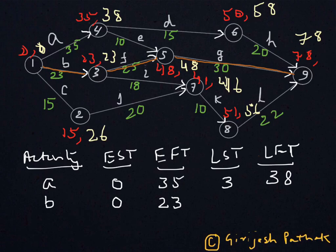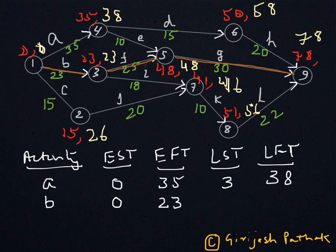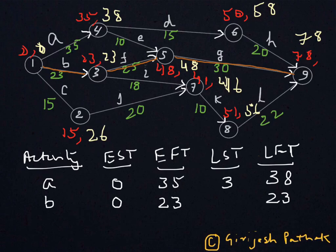For activity B's Latest Finish Time, since it ends on node 3 where the latest time is 23, activity B must be finished latest by 23 days. To get the Latest Start Time, we subtract the activity time: 23 minus 23 equals 0. So the Latest Start Time for B is also 0, meaning the Earliest Start Time and Latest Start Time are both the same.